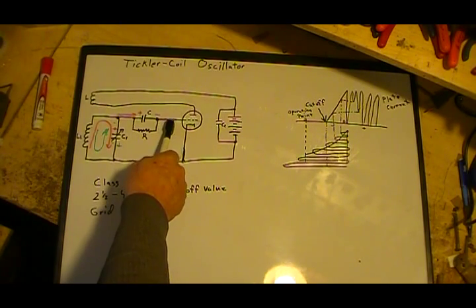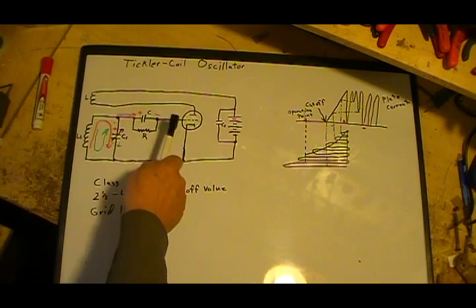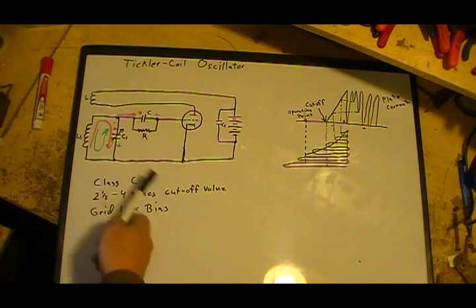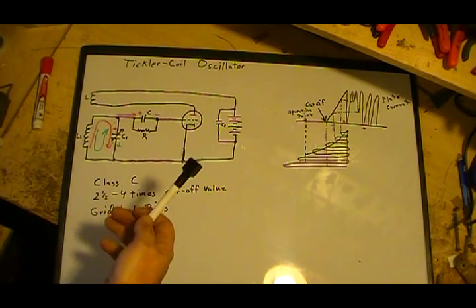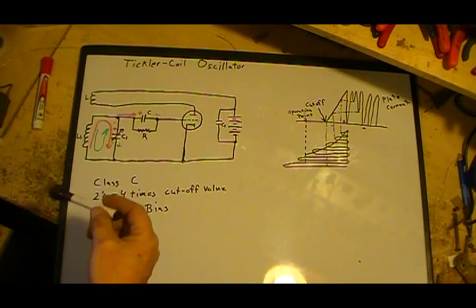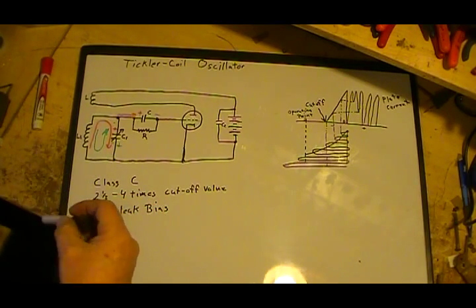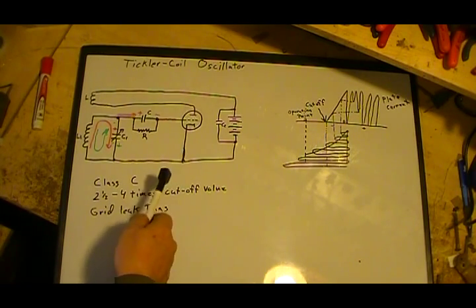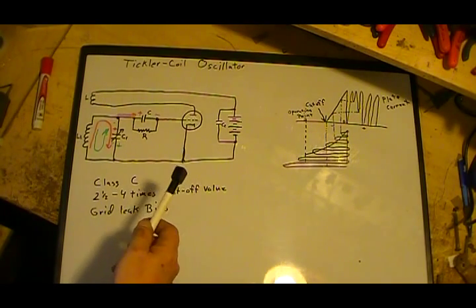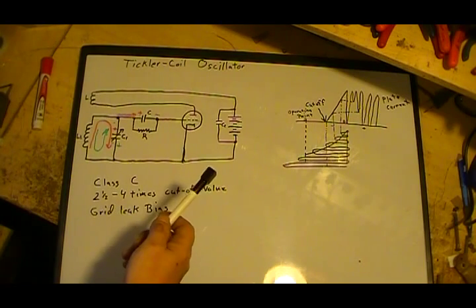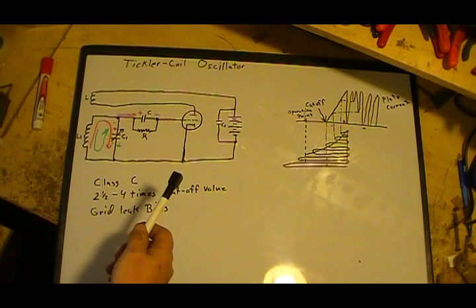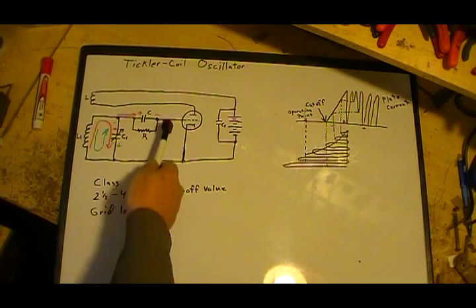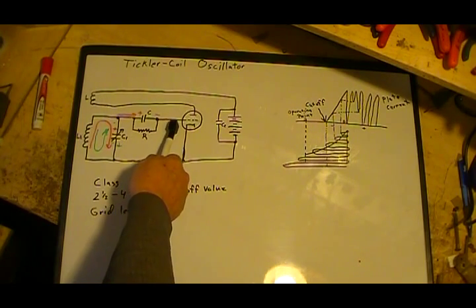That sets a set amount of voltage negative on the grid. Or you have like a battery, such as a grid battery, C battery for the grid, or you develop a negative voltage off your power supply with some dropping resistors to establish a fixed bias.